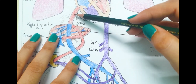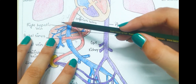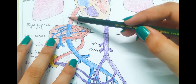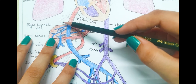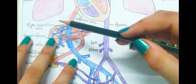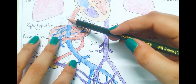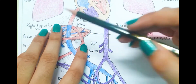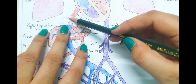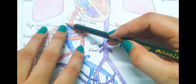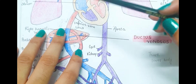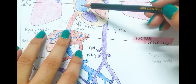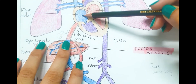In the inferior vena cava, the deoxygenated blood from the liver and lower extremities is mixed with the oxygenated blood. However, the deoxygenated blood is not enough to impair the quality of the oxygenated blood, so the quality of the oxygenated blood is not significantly affected.